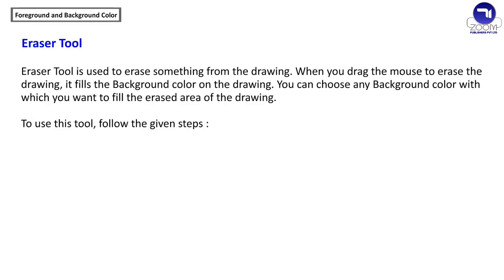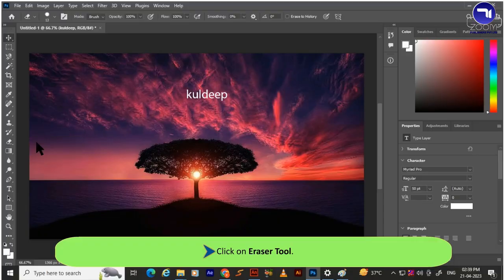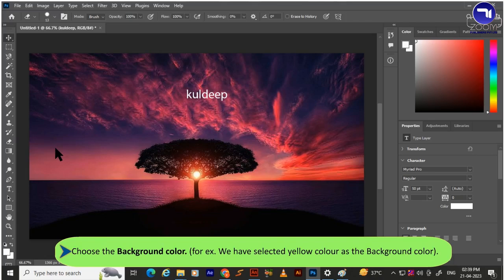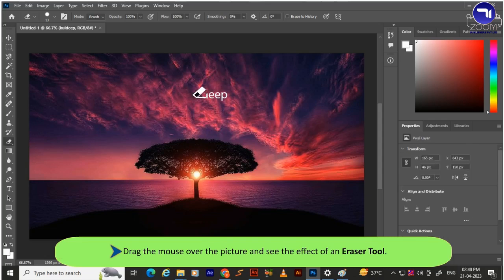The Eraser tool is used to erase something from the drawing. When you drag the mouse to erase the drawing, it fills the background color on the drawing. You can choose any background color with which you want to fill the erased area. To use this tool: click on the Eraser tool, select the size and other options as per your requirements, choose the background color — for example, yellow — then drag the mouse over the picture and see the effect of the Eraser tool.